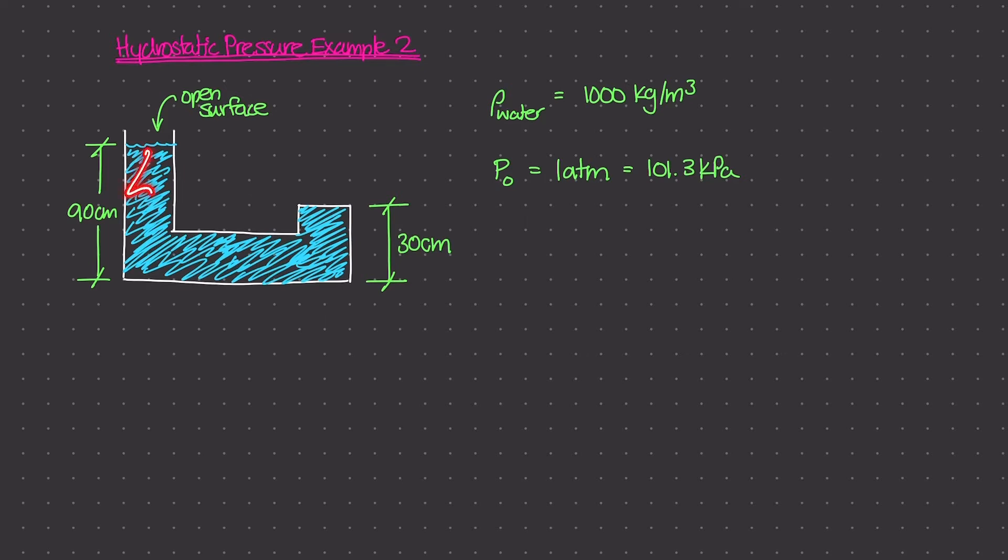Now this container is filled with water, and we know that water has a mass density of 1,000 kilograms per meter cubed. This is just a given for the problem statement. And because this container is open to the surface on one side, P₀ is going to be 1 atm or 101.3 kilopascal. So that is the atmospheric pressure here at the open surface.